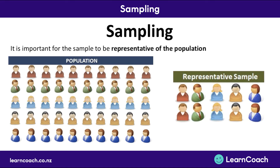A representative sample not only has all the different types of people, it has equal proportions of people. The different types of people could represent many things — gender, age, ethnicity, careers, and a large number of other things. So it's important that your sample is representative of the population, otherwise you might get results that don't apply to everyone else.